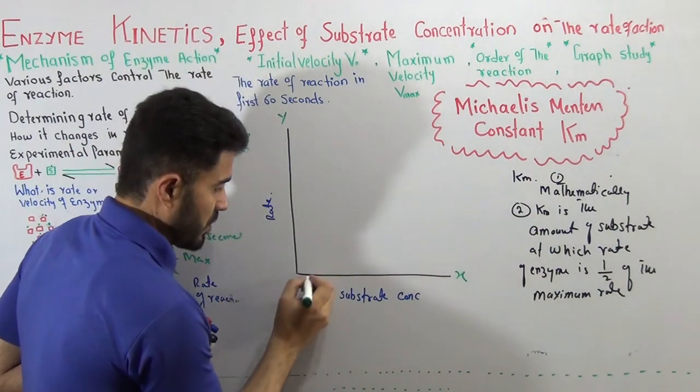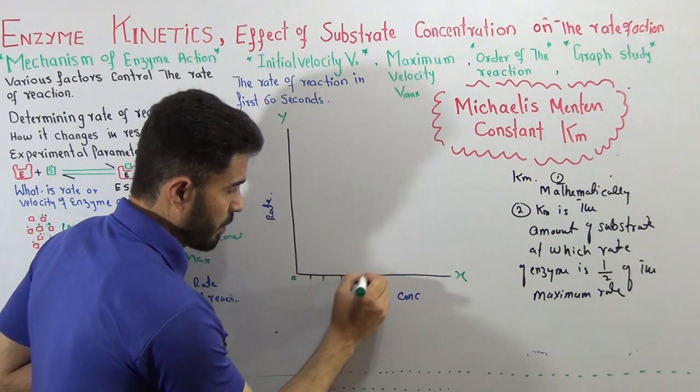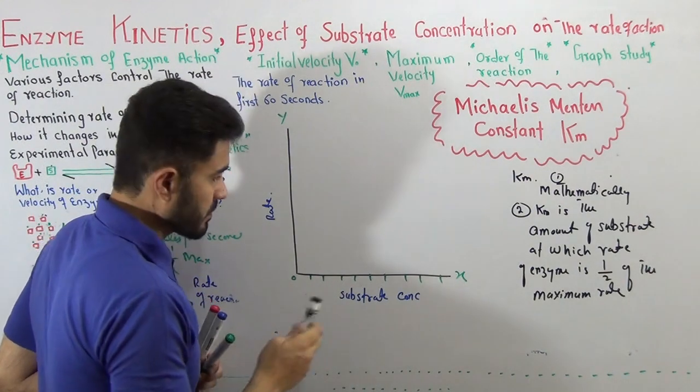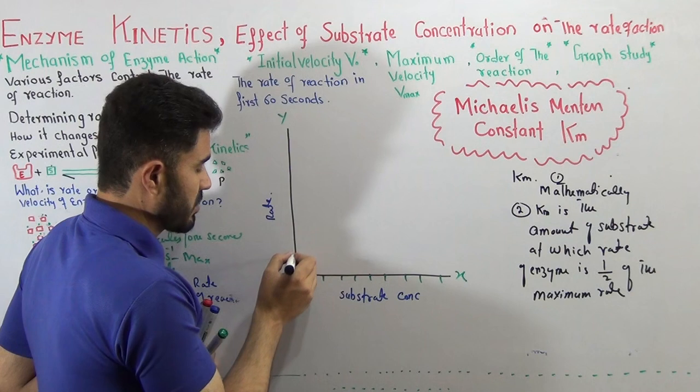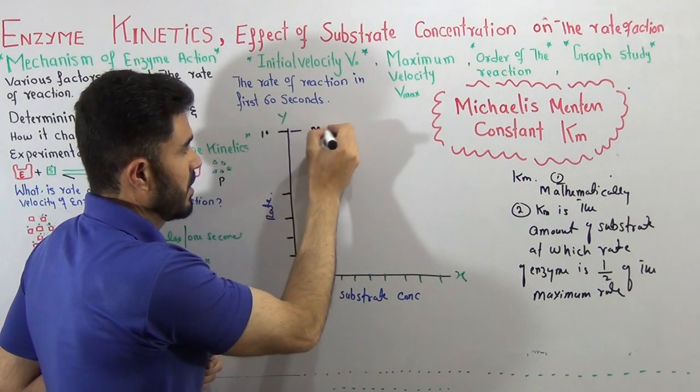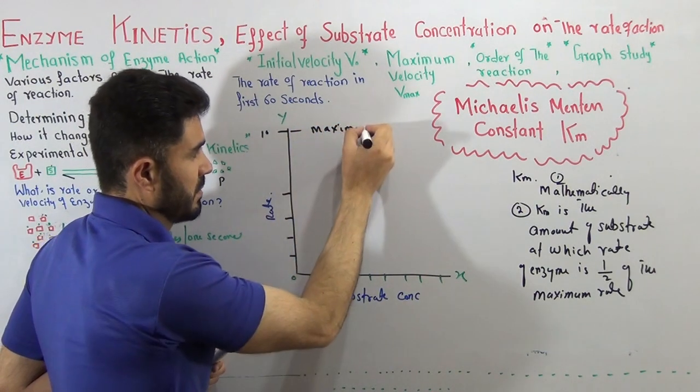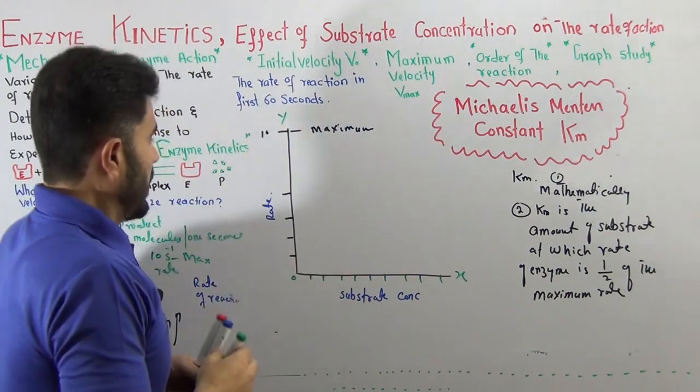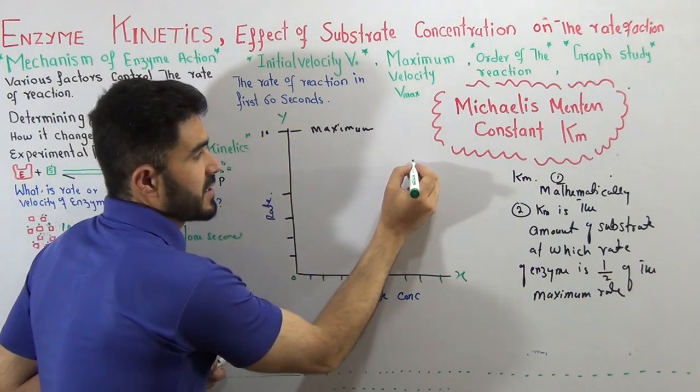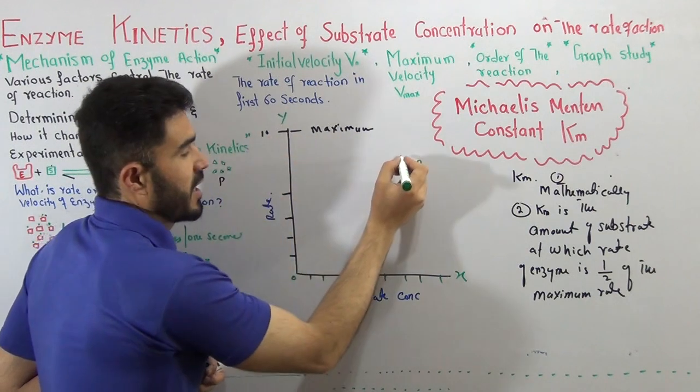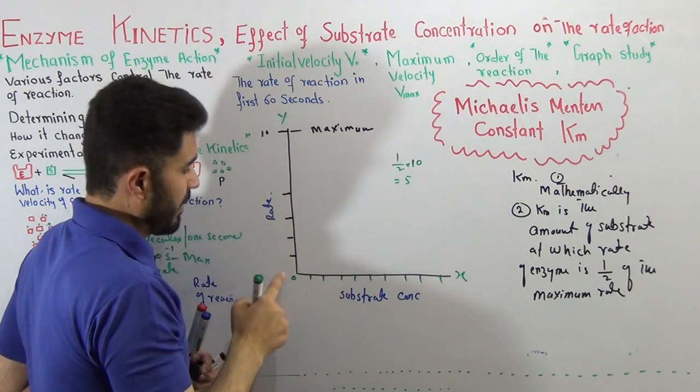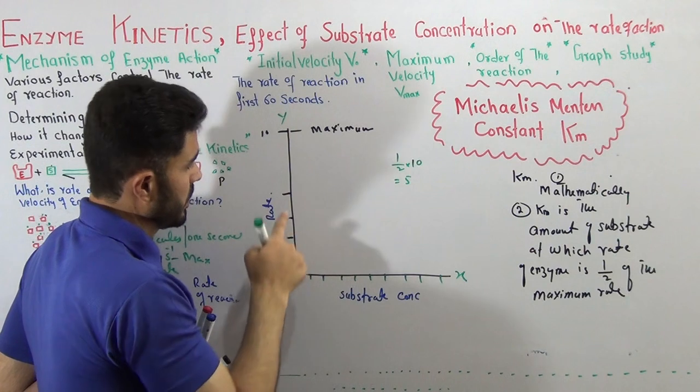Suppose you are at zero substrate, then you have one substrate, two, three, four, five, six, seven, eight, nine, ten substrate. You are increasing the substrate and your rate will also increase from one to two to three to four to ten. Suppose this is your maximum rate. You are going to find what is the half of the maximum rate. Your maximum rate is ten, what is half of this? One upon two, the answer is five.